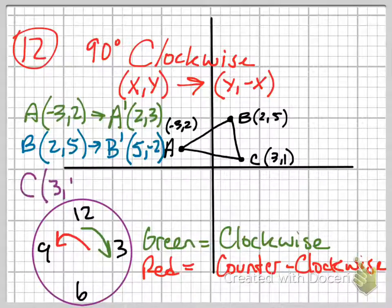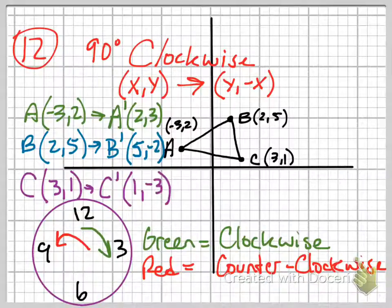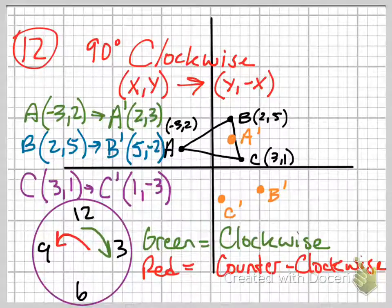And so C was 3, 1, but it changes to 1, -3. And so now you label all of your new points. So A prime goes there at 2, 3. B prime goes at 5, -2. And C prime goes at 1, -3.